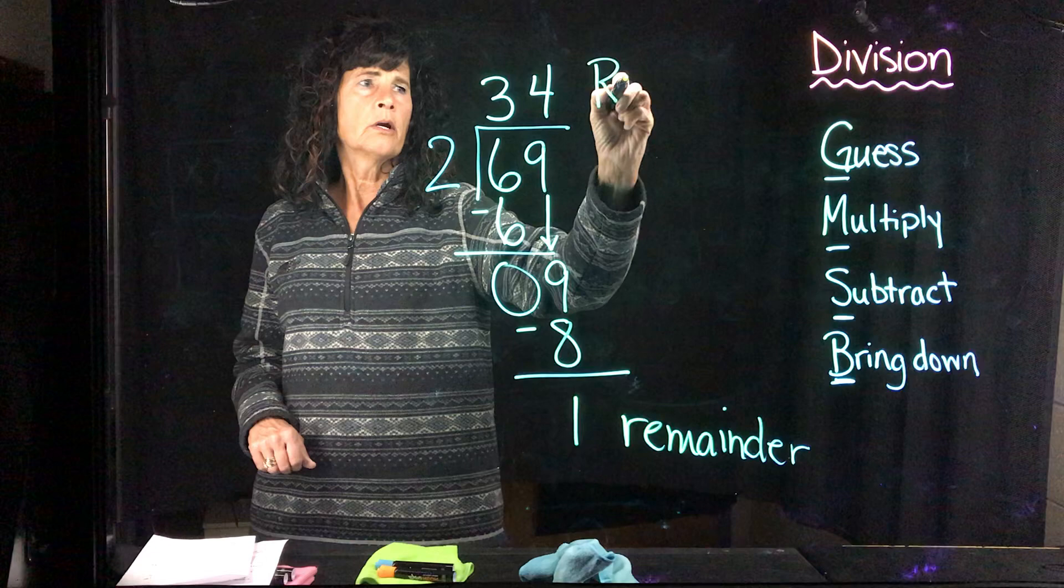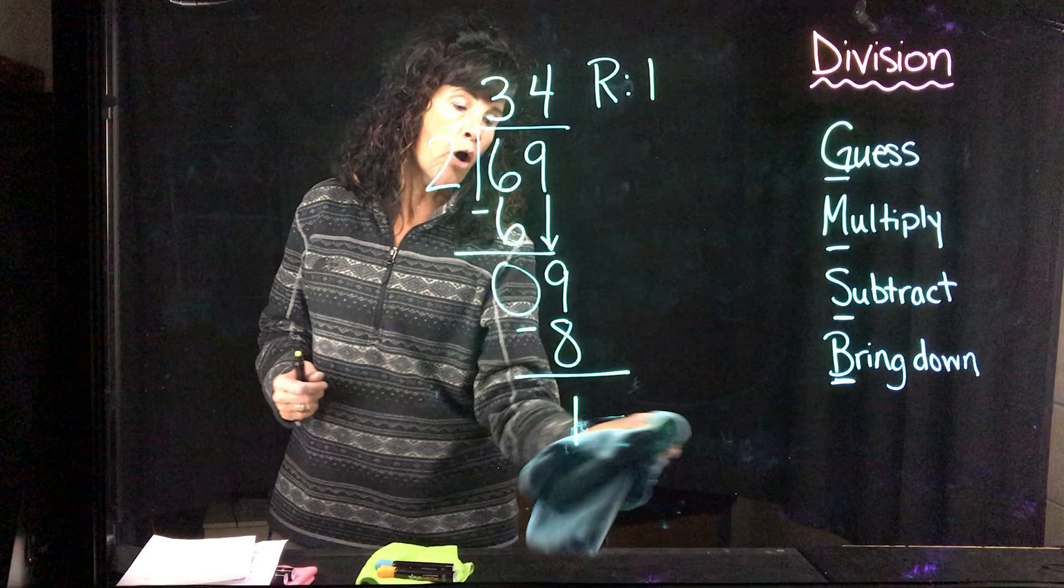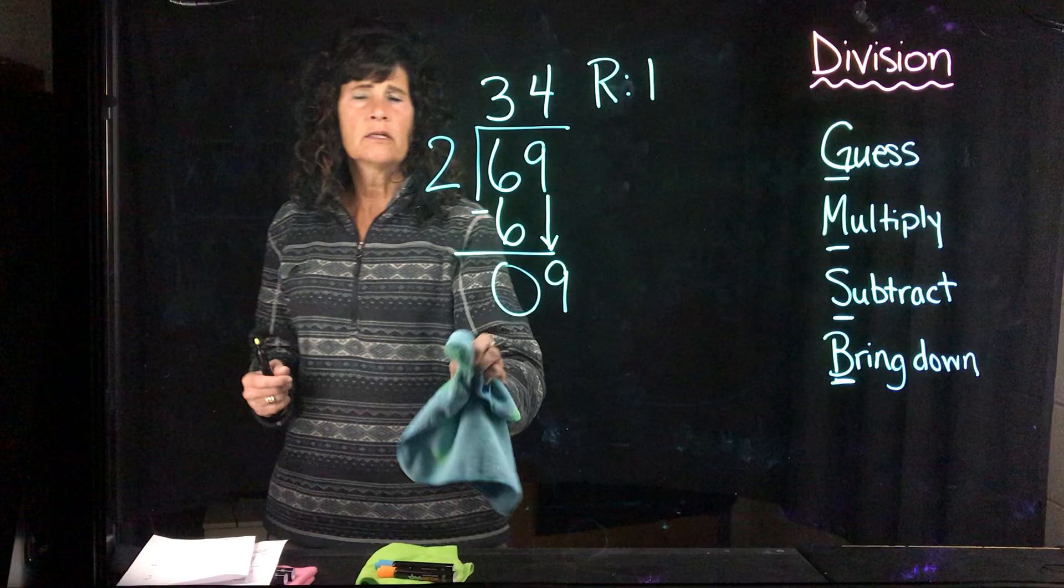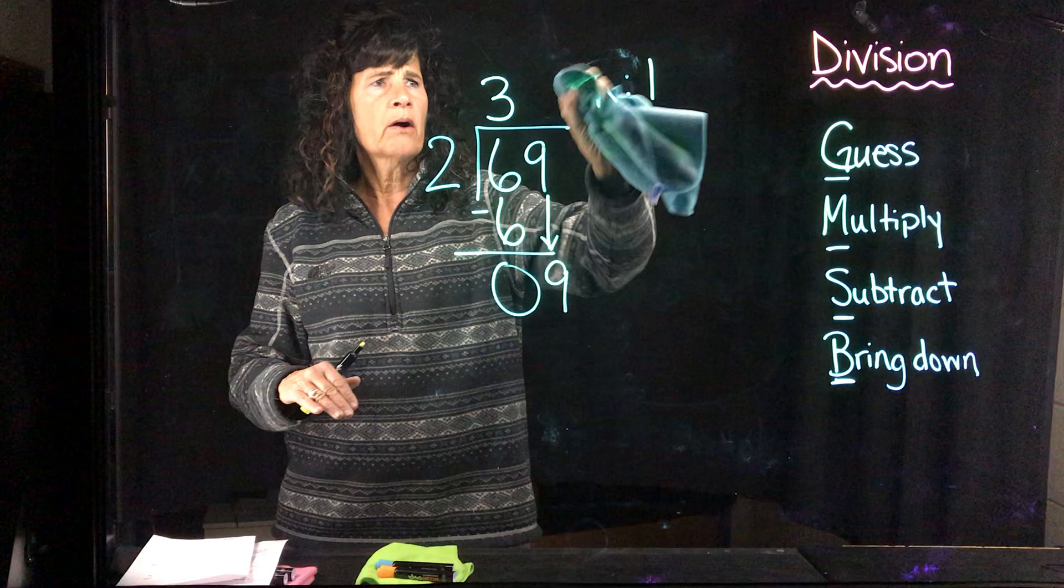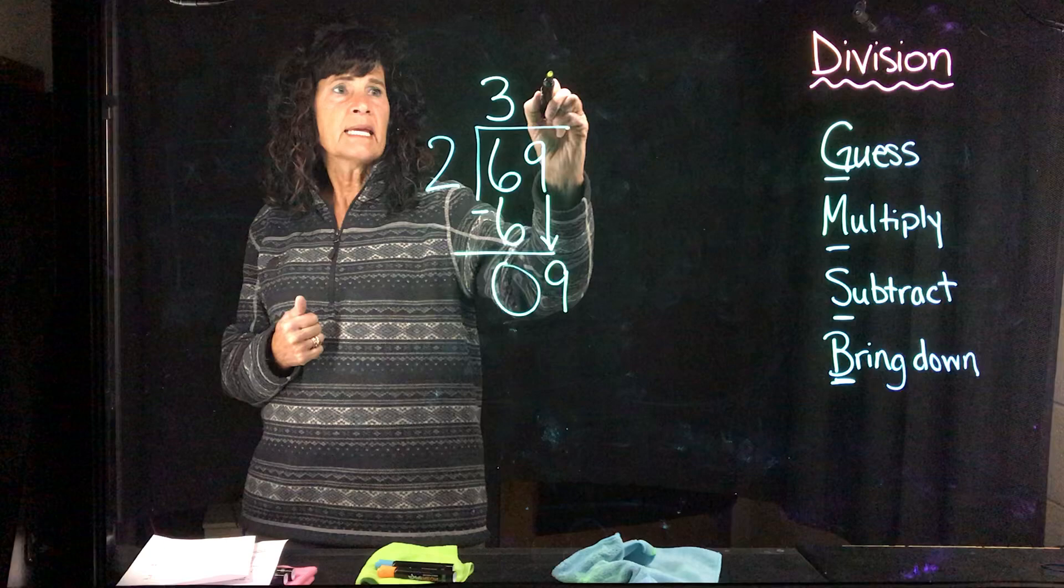And typically, what I will ask you to do is up here by the quotient, put an R, and then just say what the remainder is. Okay? Now, I'm going to back up a little bit because I hope that you caught that I made a pretty big deal about not guessing too high. Right? I can't. When I was trying to figure out how many 2's fit into 9, I don't want to go over. Right? What if I said 10 is close to 9, which it is. I'm going to guess 5.